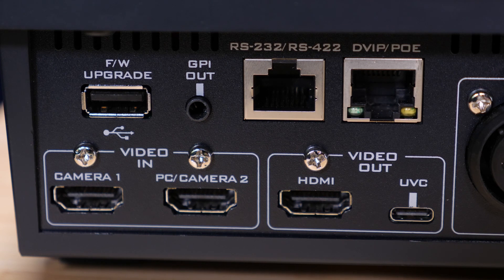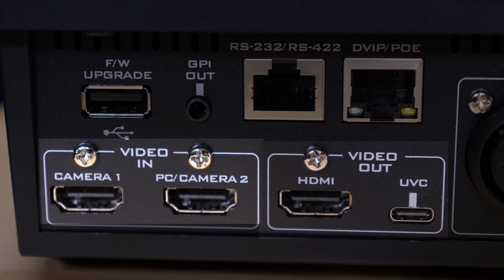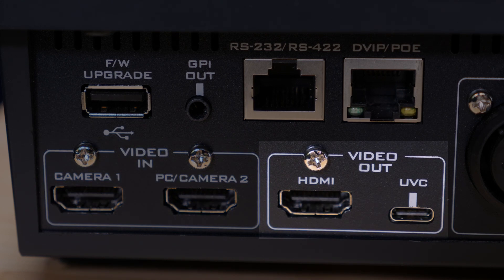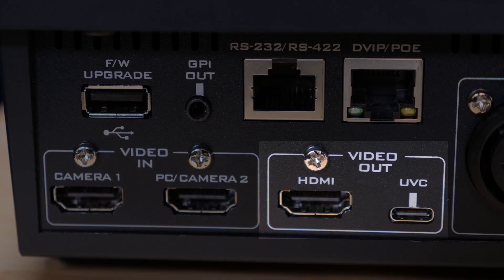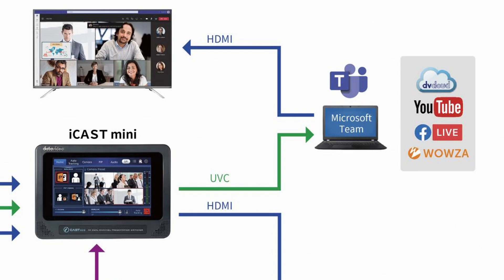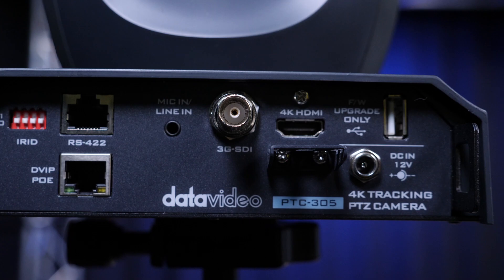On the back of the iCast mini you'll see two HDMI inputs — one for a camera and one for a laptop. There are also two outputs: one HDMI output to any video source including monitors and external recorders, and one USB-C output to connect to a laptop to send out a stream like to OBS or Zoom. There is also a DVIP port that also acts as a PoE port for connecting and controlling PTZ cameras.